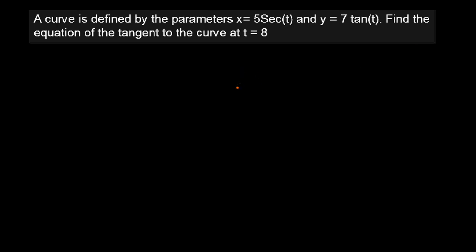A curve is defined by the parametric equations x = 5 sec t and y = 7 tan t. Find the equation of the tangent to the curve at t = 8.